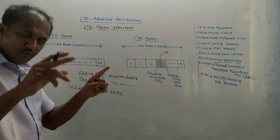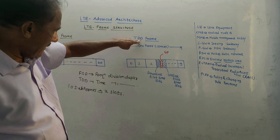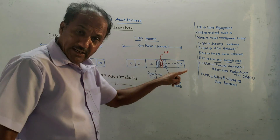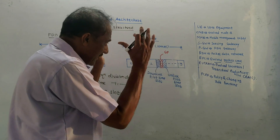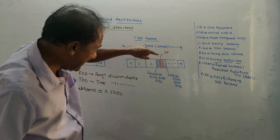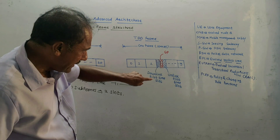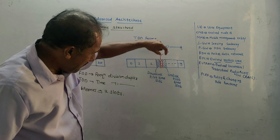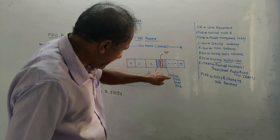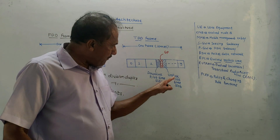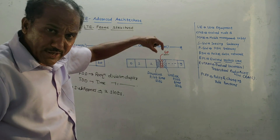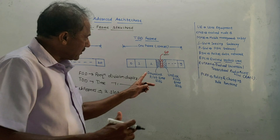For TDD, time division duplex, one frame is again 10 milliseconds but has sub-frames numbered 0 to 9, giving 10 sub-frames. The same frequency is used for uplink and downlink, but the time slots are different. A special sub-frame has three parts: the downlink pilot time slot for downlink communication, the uplink pilot time slot for uplink communication, and in between, GP — the guard period — which separates the uplink and downlink time slots.